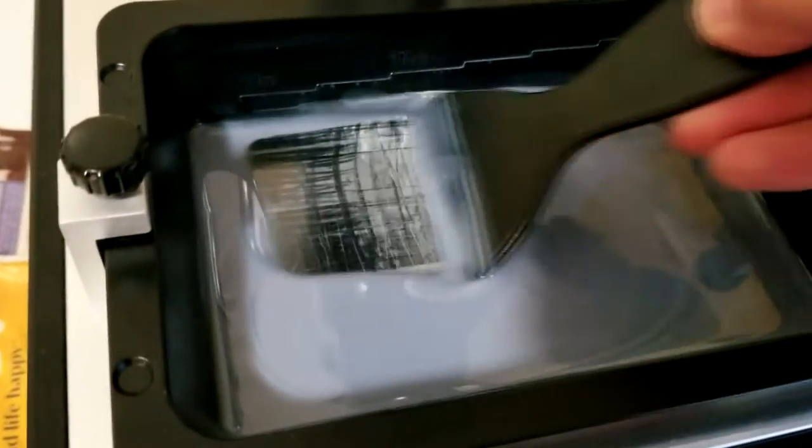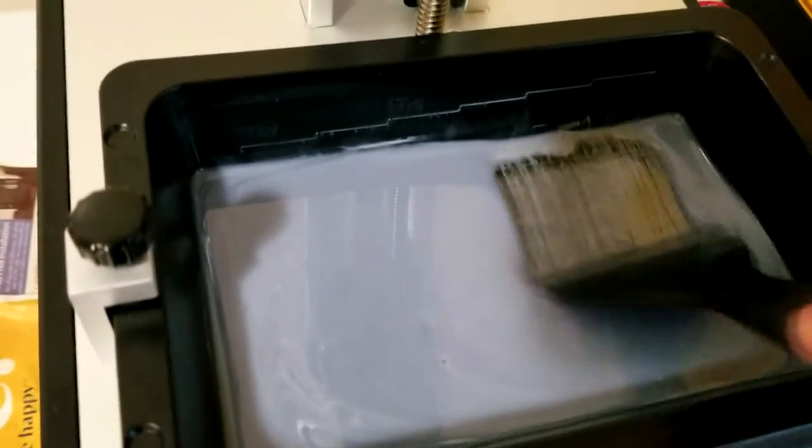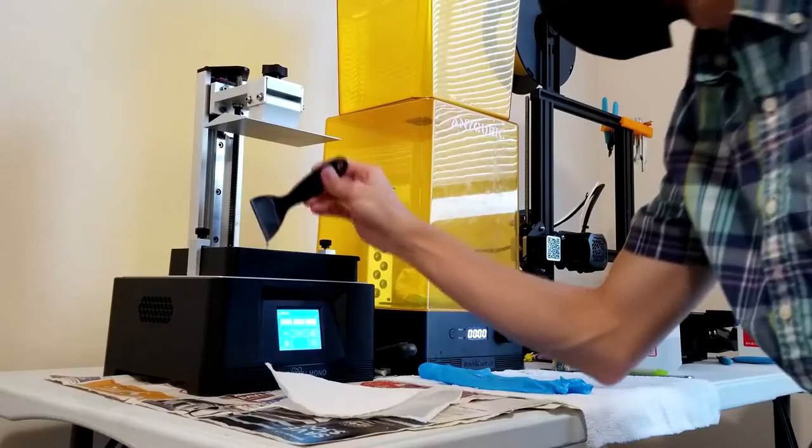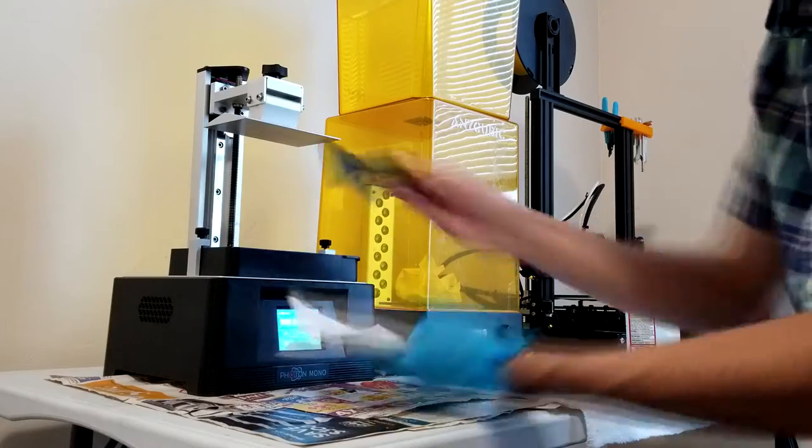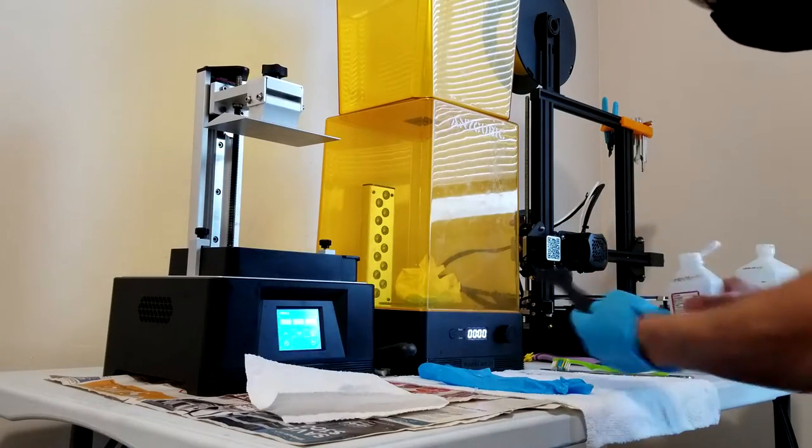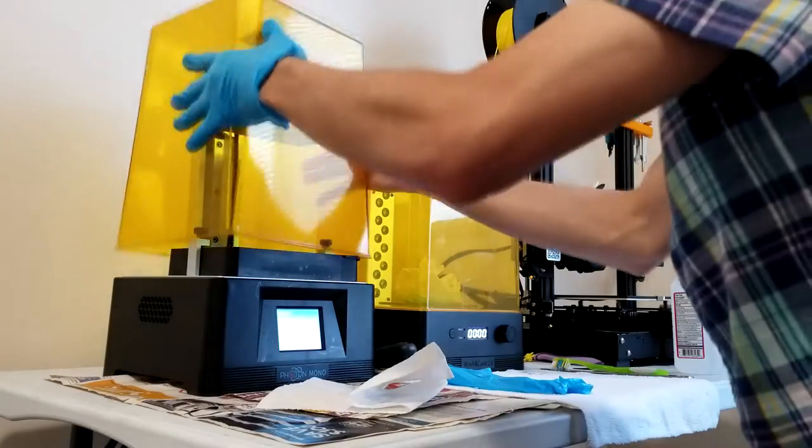The FEP is the plastic at the bottom of the vat. I scrape all this residual resin off the bottom. I think it's partly cured resin as well as heavier parts of the resin mixture sinking down to the bottom. So you just lightly scrape until the FEP is clean and the resin is mixed. Make sure you're using the plastic tool. Never use a metal scraper on the FEP. You do not want to scratch the FEP.